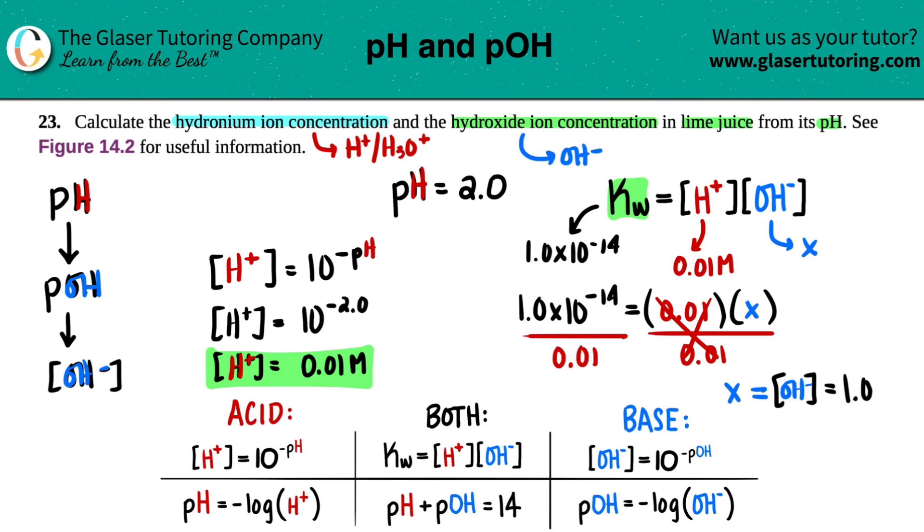And we'll do 1.0 times 10. And let me just move this over just so that we have a little bit more room to the negative 12th. And a little bit more room is needed. There we go. That's good enough. Molarity.